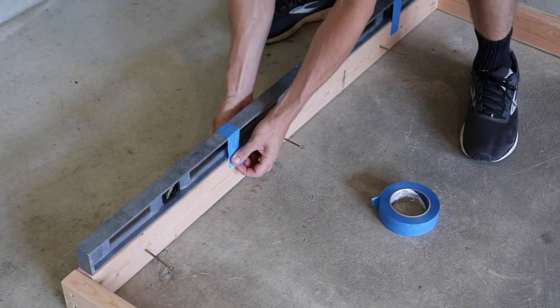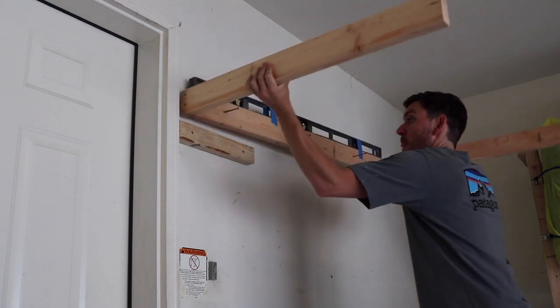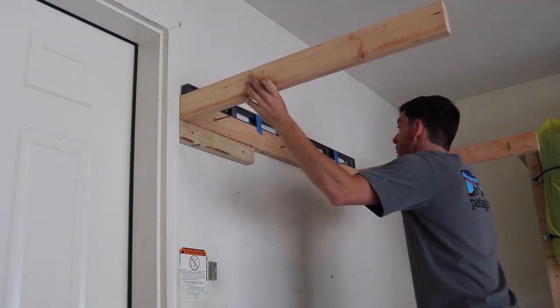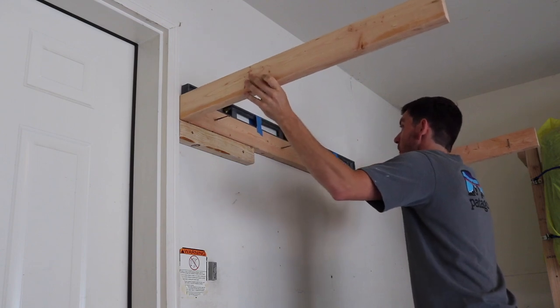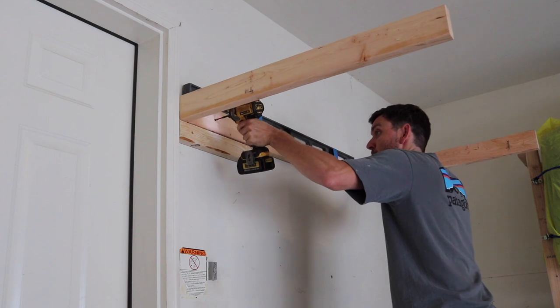So now what I can do is rest one side on that block that I put on the wall. And I can just move the other side up and down to make sure that it's level. So once it's level, I'll just attach it to the studs with these screws that are already started.